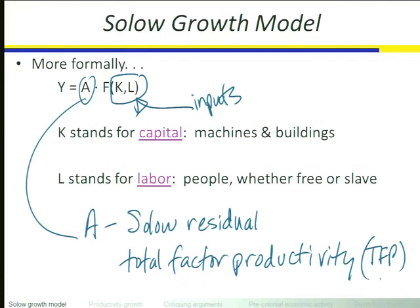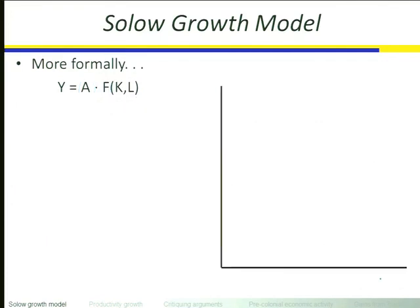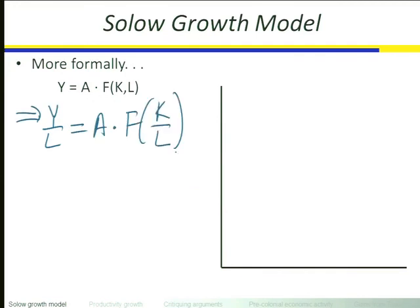So far what we have is just the production function. We can look at it graphically. When we graph the production function, we do a little mathematical trick: so long as we make the assumption of constant returns to scale — if we double all inputs we get double output, if we triple all inputs we get triple output — this equation for the production function is equivalent to output per worker equals A times some function of the capital-labor ratio. It's just a little mathematical trick.